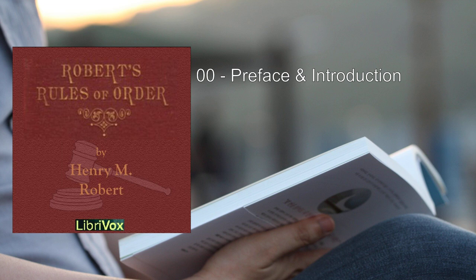The object of rules of order in deliberative assemblies is to assist an assembly to accomplish the work for which it was designed in the best possible manner. To do this it is necessary to somewhat restrain the individual, as the right of an individual in any community to do what he pleases is incompatible with the best interests of the whole. Where there is no law but every man does what is right in his own eyes, there is at least no real liberty.